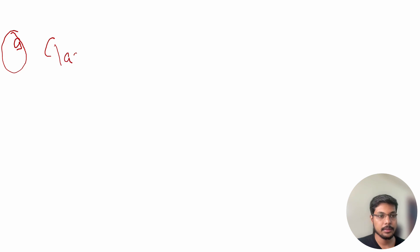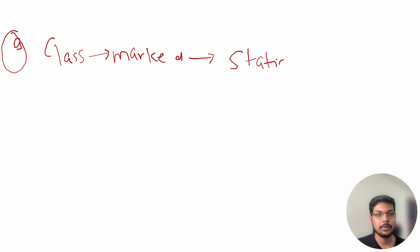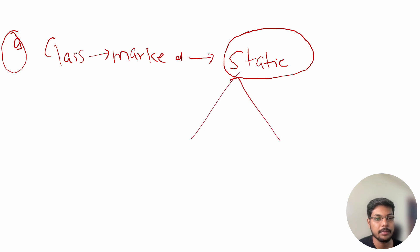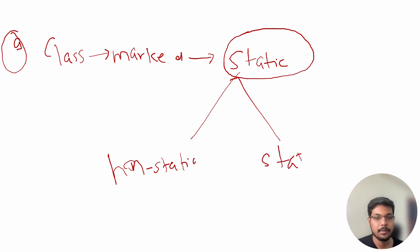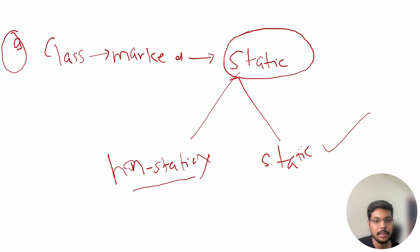Question number nine is: if a class is marked as static, can it have non-static methods in it? Or is it mandatory that all variables, methods, and properties within a static class must also be static? Can a static class have non-static methods, or must all methods be static?